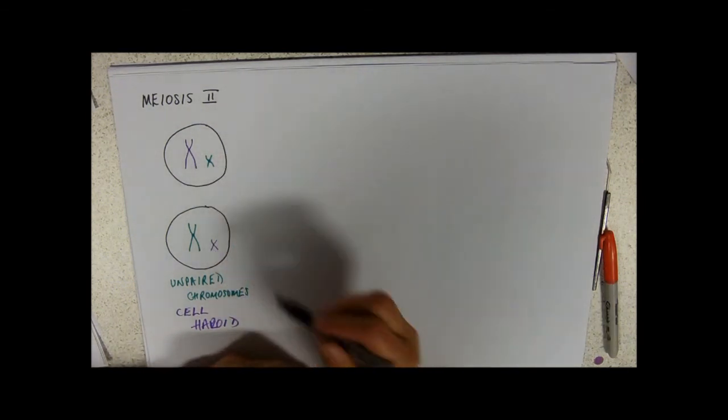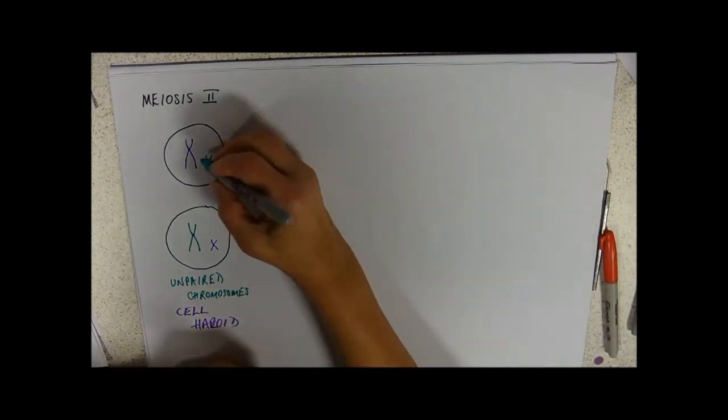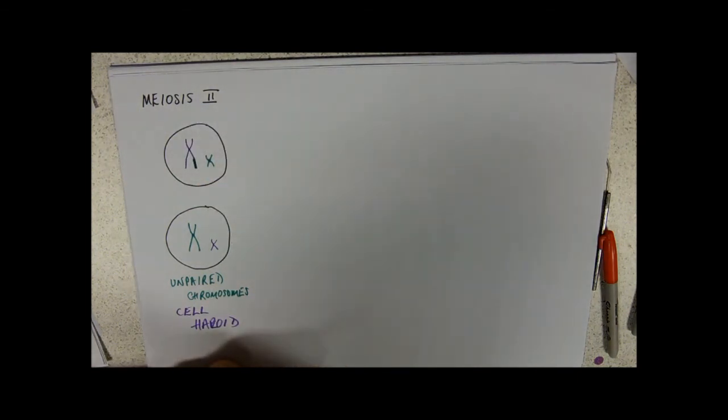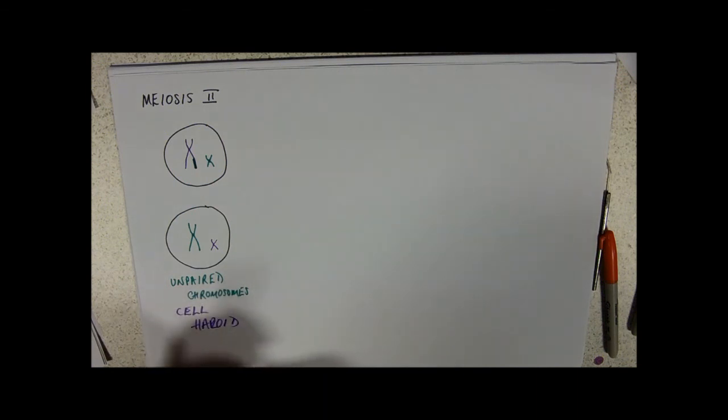Remember that our chromosomes have crossed over, way, way back in prophase I. So, this one might have some maternal genes on it. It would be different from this one. So, again, you get a bit of random assortment going on.